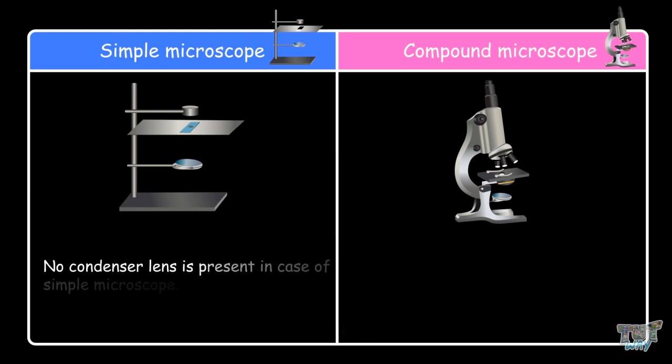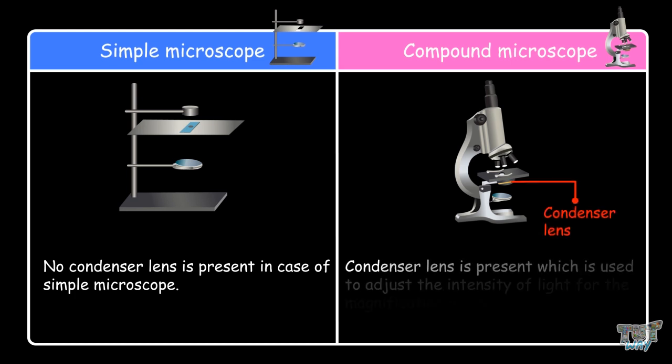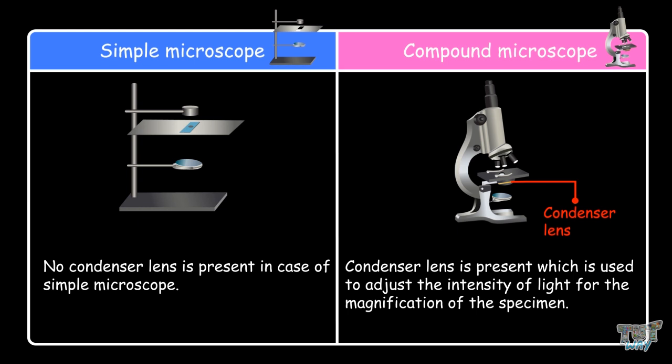No condenser lens is present in the case of a simple microscope, but the condenser lens is present in a compound microscope. It is used to adjust the intensity of light for the magnification of the specimen.